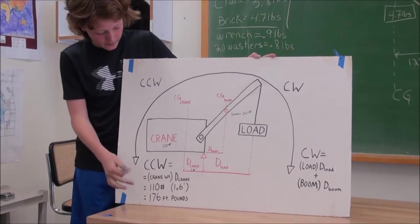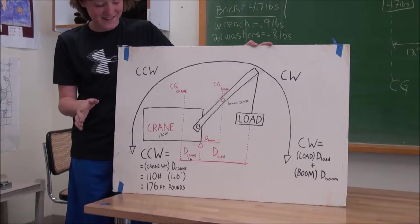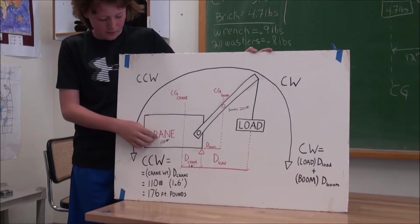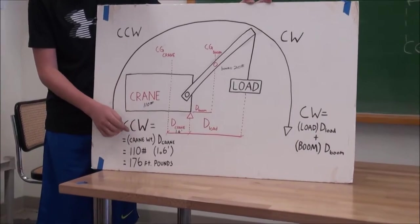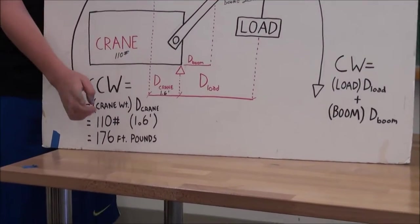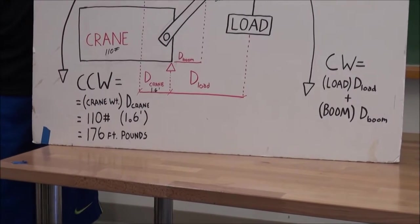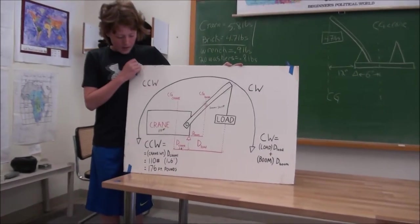For the distance, it's distance times weight. The weight of the body of the crane is 110 pounds and the distance from the center of gravity of the crane to the pivot point is 1.6 feet. So 1.6 feet times 110 pounds is 176 foot pounds.